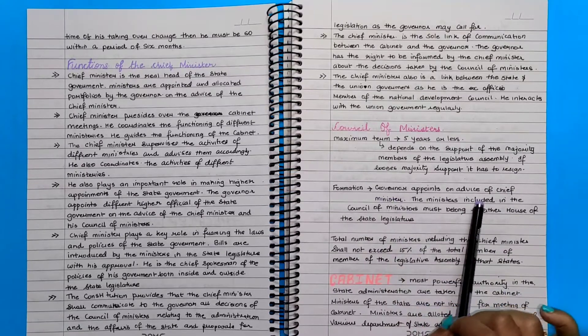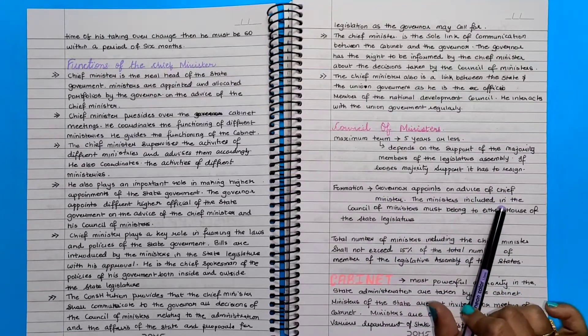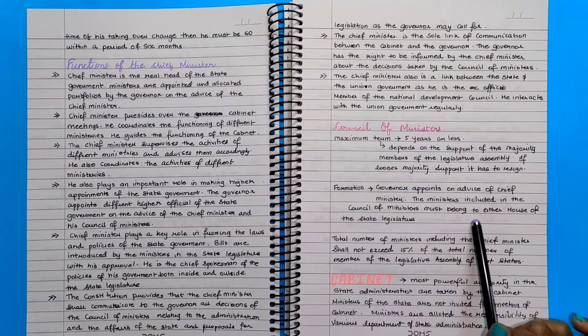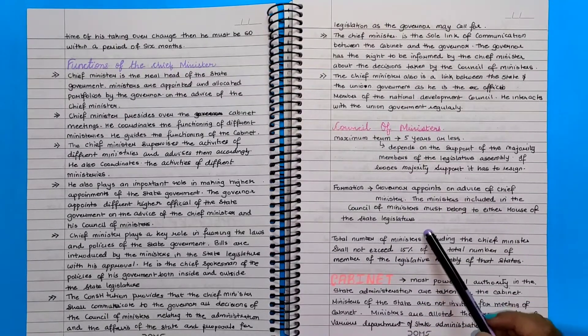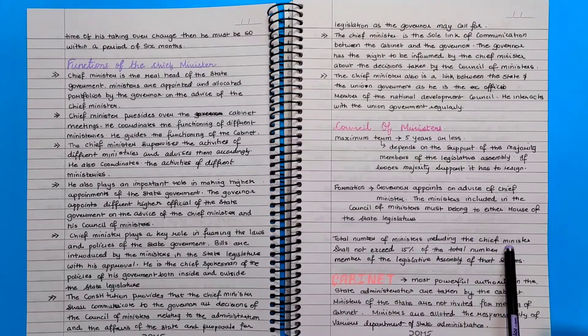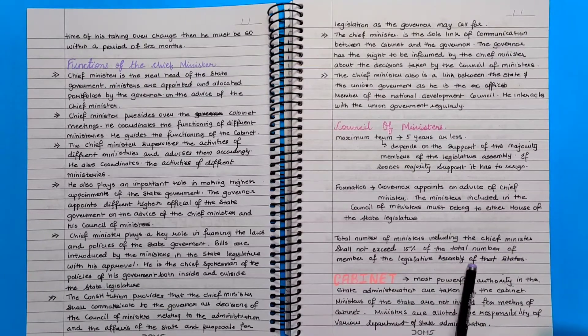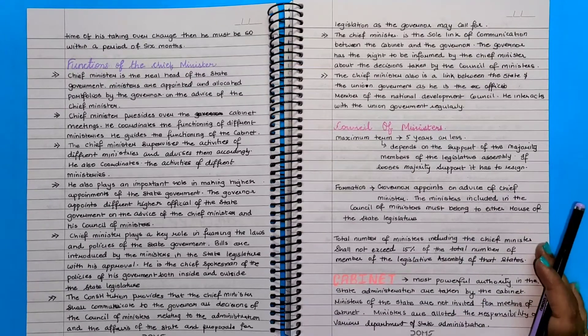Formation: The governor appoints on the advice of the chief minister. The ministers included in the council of ministers must belong to either house of the state legislature. Total number of ministers, including the chief minister, shall not exceed 15% of total number of the members of the legislative assembly of that particular state.